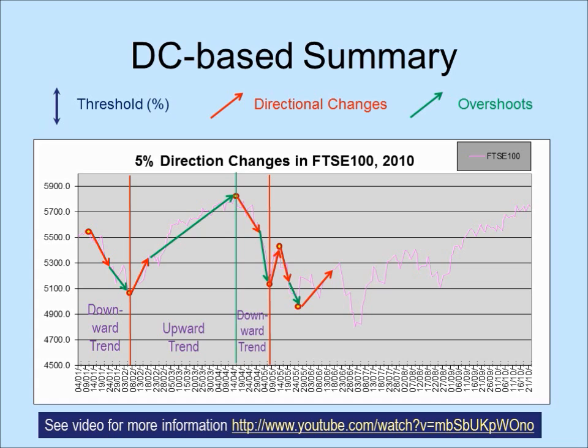What we see here is a 5% directional change summary. We would get a different summary when we use a different threshold.